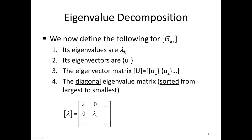We now define some variables for the matrix GXX that we will use to diagonalize it. We denote its eigenvalues by lambda_k and corresponding eigenvectors u_k. Then we put the eigenvectors into columns in the eigenvector matrix uppercase U. Finally, we define the diagonal eigenvalue matrix lambda, with the eigenvalues sorted in descending order from the largest to the smallest eigenvalue.